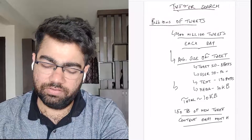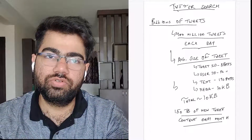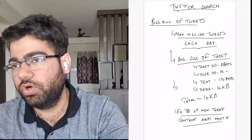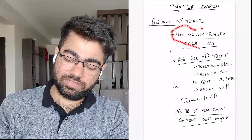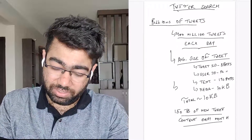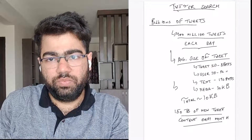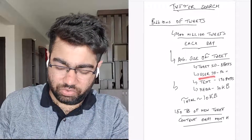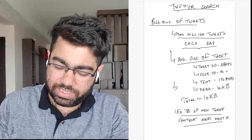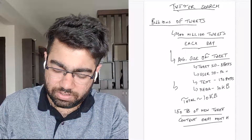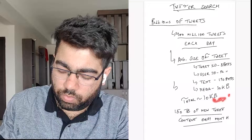Twitter is basically a status website — everyone writes a small tweet and posts it, like their status or what they're thinking. Every day there are billions of tweets happening on Twitter. Let's suppose there are 400 million tweets per day. Now let's calculate the average size of a tweet: a tweet ID is around 8 bytes, a user ID around 32 bytes, text 140 bytes, and some media like an image around 10 KB. So let's say the total is around 1 MB or something like that.